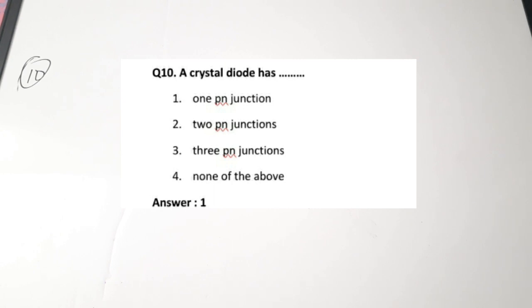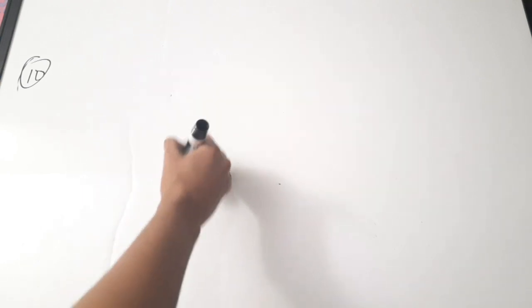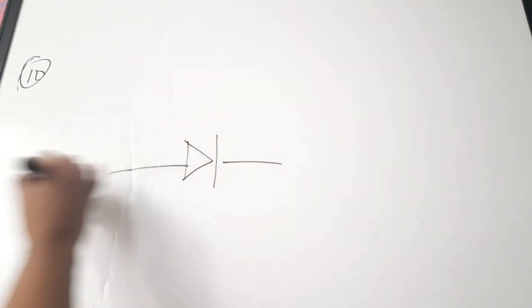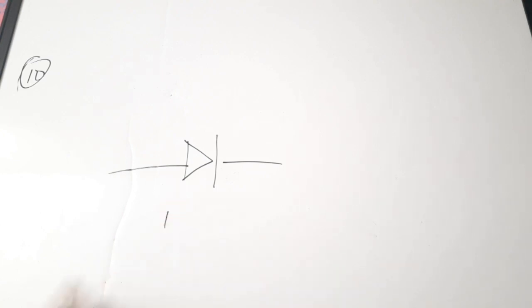The tenth question: a crystal diode has dash — 1 PN junction, 2 PN junctions, 3 PN junctions, or none of them. A crystal diode means normally a PN junction diode — it has 1 PN junction, a single PN junction. Correct answer is 1.